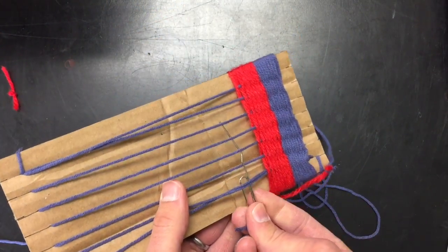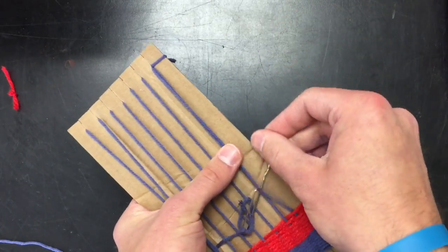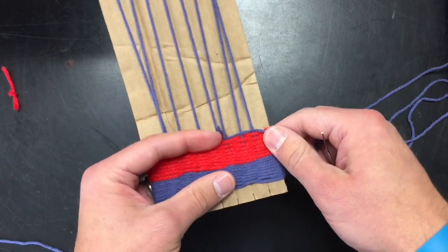Once you've added a new string, you can just continue weaving on. Make sure that if your paperclip gets stuck on something, you always go back and fix it and make sure that no damage was made to the warp strings, which are those vertical strings again.